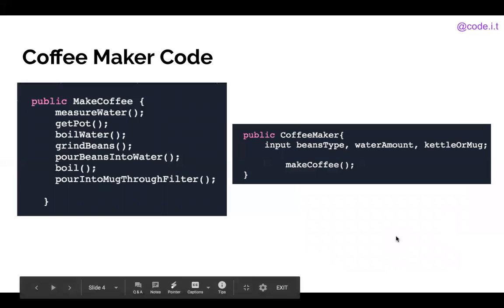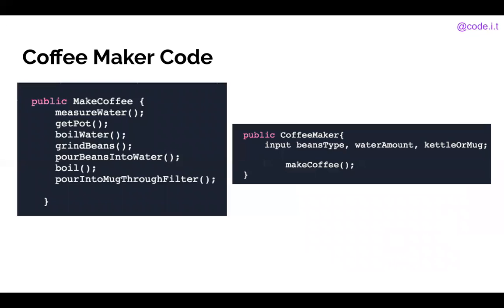However, if we have our abstraction method coffee maker, it's assumed that coffee maker is a different set of code that already has all your steps of how to make coffee. We'll just take in your beans type, how much water you want, whether you can put it in a kettle or a mug, and then we'll just tell the coffee maker to make the coffee. So every time you want to make coffee, you can just call the method coffee maker instead of going through and writing every single one of these steps out that we can see here on the left. So with abstraction, you really just reduce all the steps you have and make it much easier for yourself as a programmer.